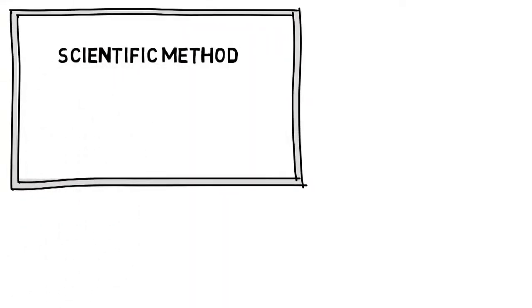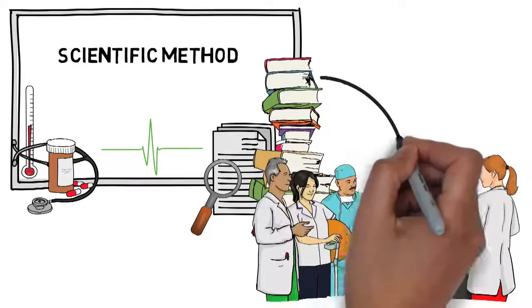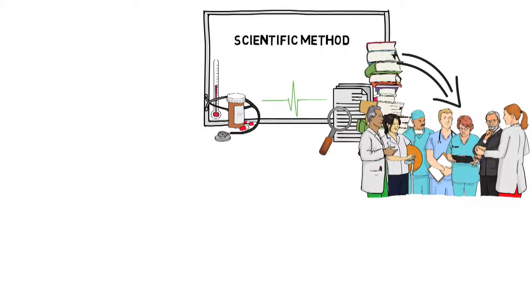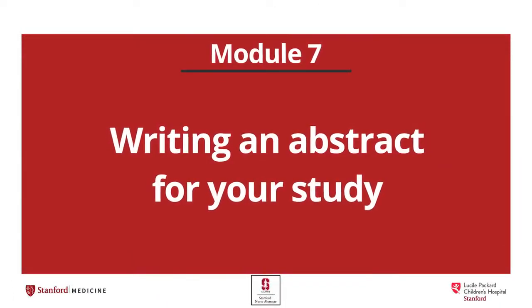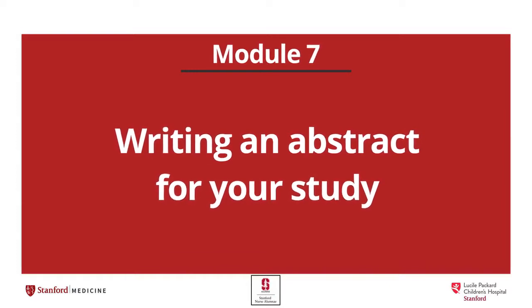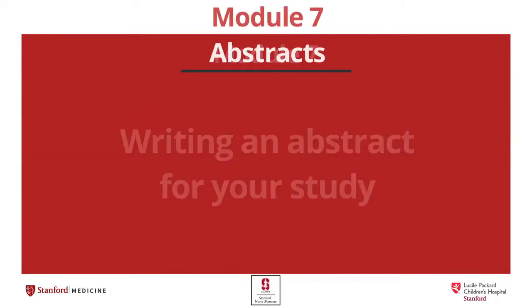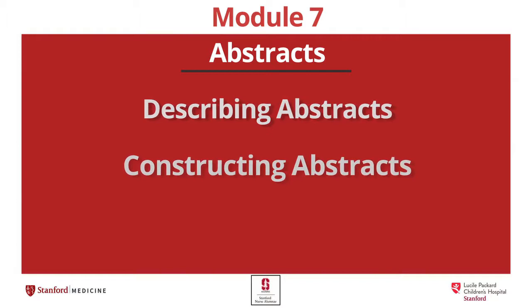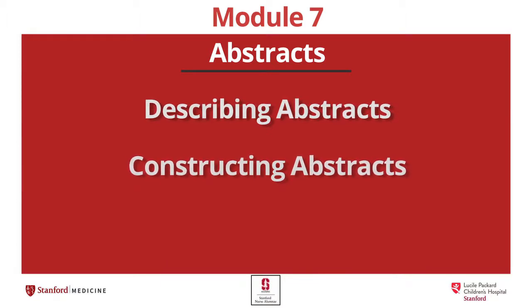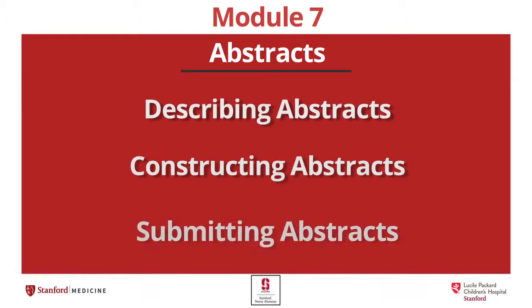Welcome to our series of learning modules that focuses on the value of research in patient care. Our objective is to educate clinical staff on the scientific method and how to apply it to everyday clinical practice. Here in Module 7 we will explore how to write an abstract and submit it to a professional conference. In this module we will describe the two major types of abstracts, construct an illustrative abstract using a quantitative example from Module 2, and show what is involved in submitting the abstract to a conference website.